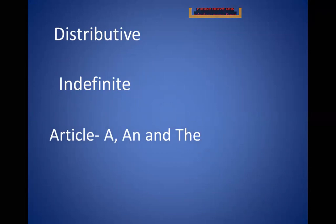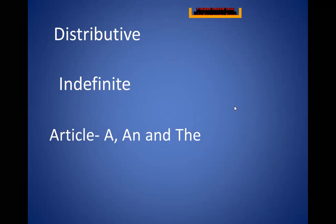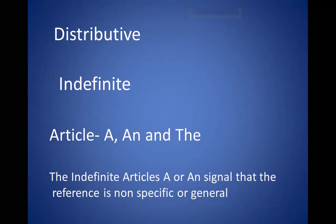Articles: we have three articles — A, AN, and THE. A and AN are indefinite articles, and THE is the definite article. The indefinite articles A and AN signal that the reference is nonspecific or general — they are used indefinitely, meaning for a nonspecific or general noun. These are called indefinite articles and come under the category of determiners.